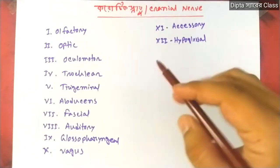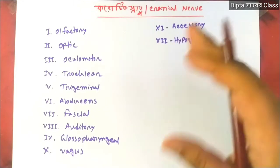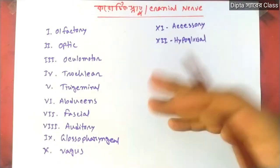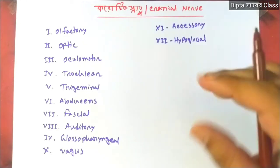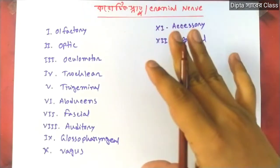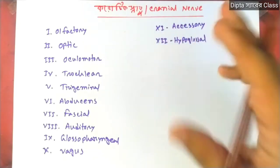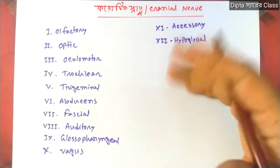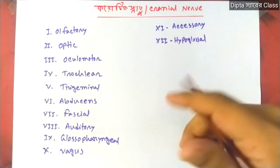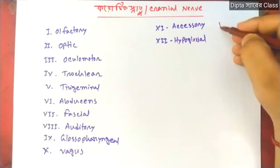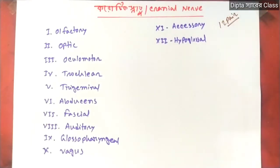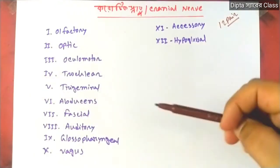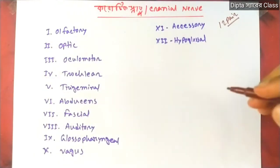The Korotiks Snaheo — we are talking about Korotiks Snaheo (Cranial Nerves). This video is also about Korotiks Snaheo. This is the Korotiks Snaheo series: 1, 2, 3, 4, 12. You can use these names as a serial.